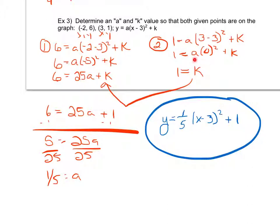And like I said, if I had not had this drop out so nicely, I definitely could have also used elimination to help me solve for that a and k value as well.